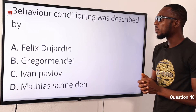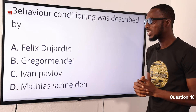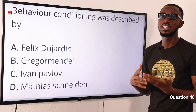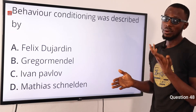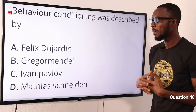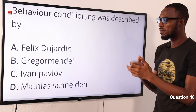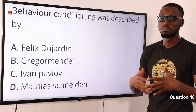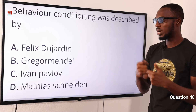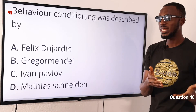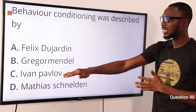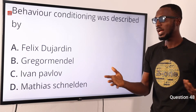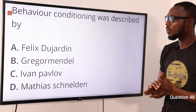Question 48. Behavioral conditioning was described by whom? Félix Dujardin was a French biologist associated with the classification of invertebrates and protozoa. Gregor Mendel and Morgan are associated with the principle of heredity. Ivan Pavlov, a Russian physiologist, is who we are looking for — he described classical conditioning. When you bring a bowl or ring a bell that the dog is accustomed to, the dog will salivate at the presence or sound alone. Matthias Jakob Schleiden is associated with cell theory as a German botanist and co-founder. So the correct option is option C for Ivan Pavlov.